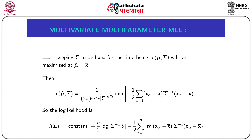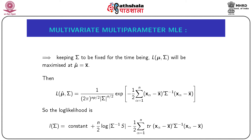The second term on the right-hand side is a positive definite quadratic form since Σ is a positive definite matrix. Hence this term is minimized — equal to zero — if and only if x̄ − μ = 0, i.e., μ = x̄. This implies that, keeping Σ fixed, the likelihood function is maximized at μ̂ = x̄, the sample mean vector.